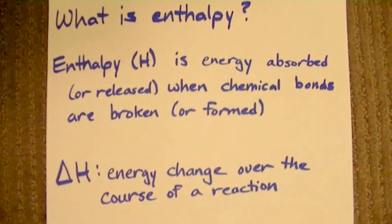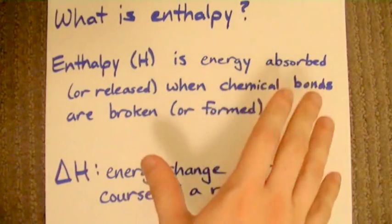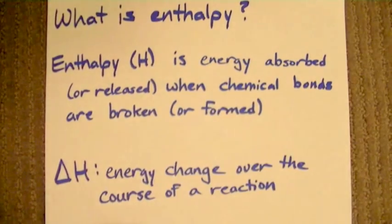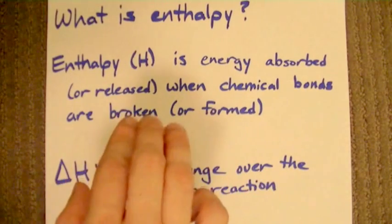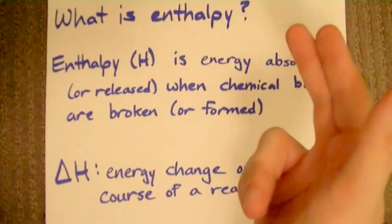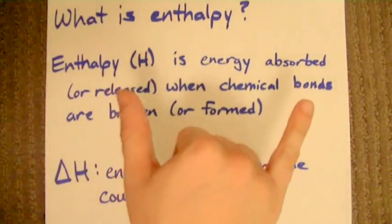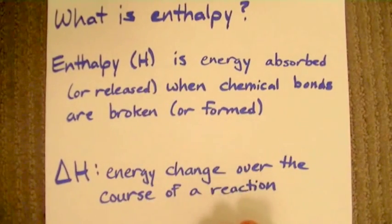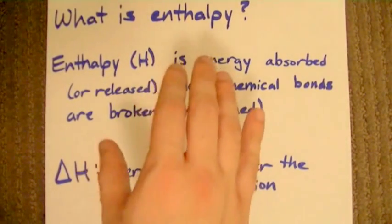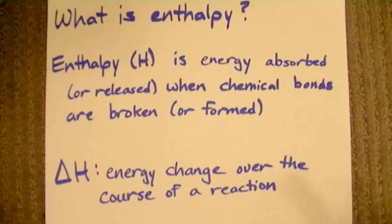A lot of you are asking philosophical questions like, what is enthalpy? So this is my video to help explain it. Enthalpy itself is the energy from chemical bonds. When chemical bonds are broken, you need to put in energy — energy is absorbed when bonds are broken. But if you have two atoms coming together to form a bond, energy is actually released. This energy change as a whole is called enthalpy, and we call it delta H, because H is enthalpy and delta is the change in enthalpy over the course of any particular chemical reaction.